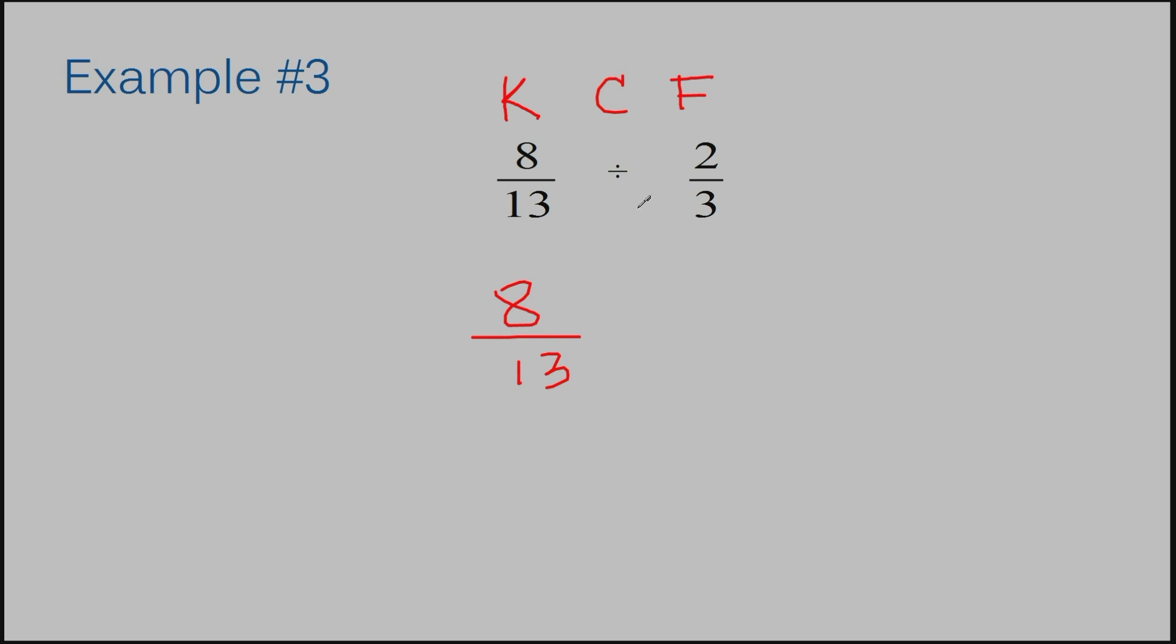I'm going to change my division sign to a multiplication sign, and I'm going to flip my last fraction to its reciprocal. A reciprocal means you switch the position of the numerator and the denominator. The numerator becomes your denominator, and your denominator becomes your numerator. Now you solve like a regular multiplication problem.